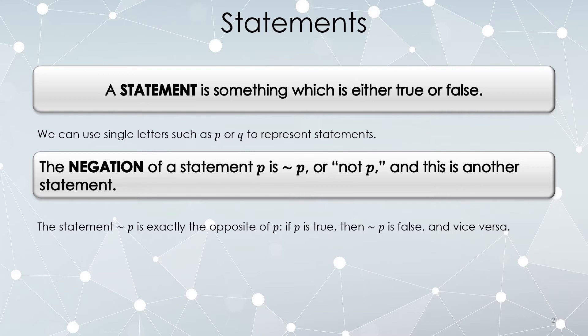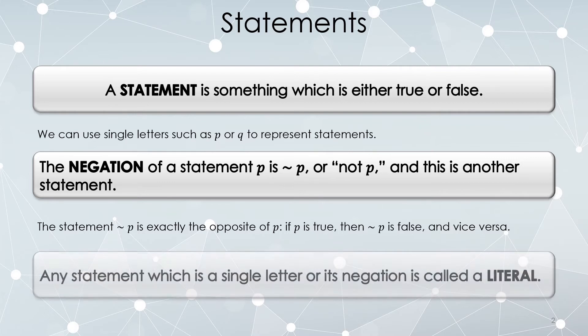The statement P is either true or false, and since we're declaring that not P is another statement, it must be true or false. When P is true, not P is false, and when P is false, not P is true. Any statement formed either out of a single letter or the negation of a single letter is what's called a literal.